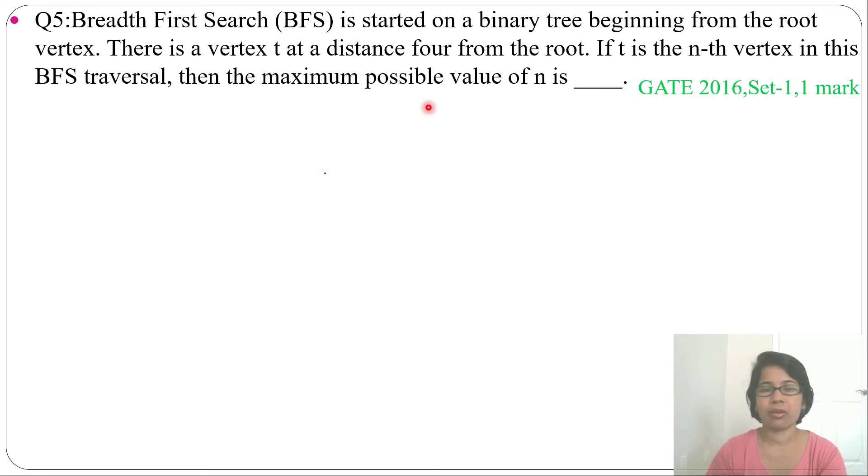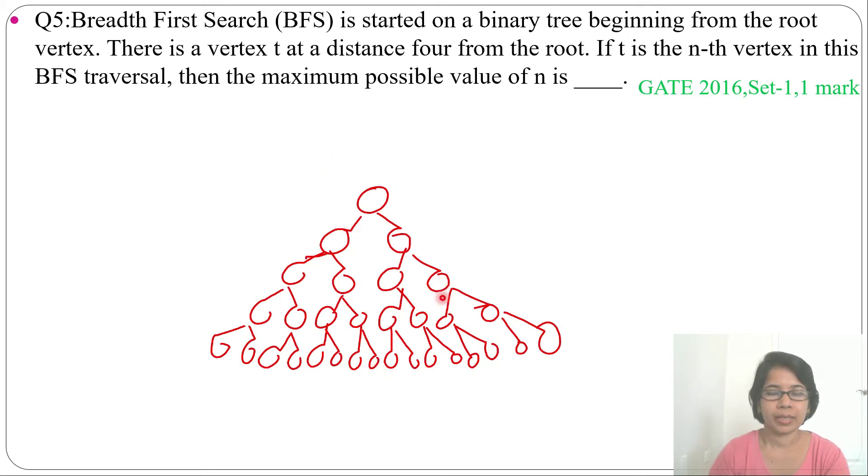Let me represent a binary tree of height 4 so you can easily visualize what it is exactly asking. This is a binary tree of height 4, so here distance is 4 from root to the leaf node. It is asking if t is the nth vertex in the BFS traversal.